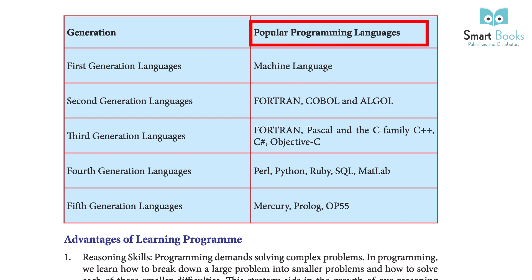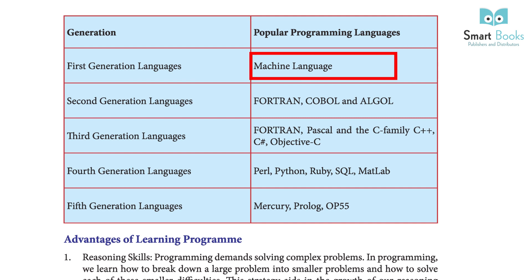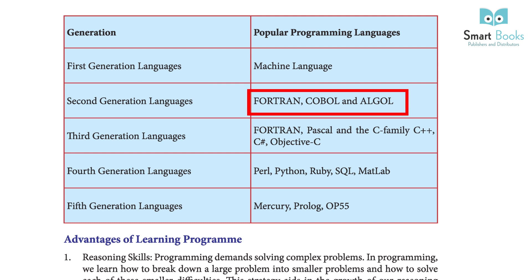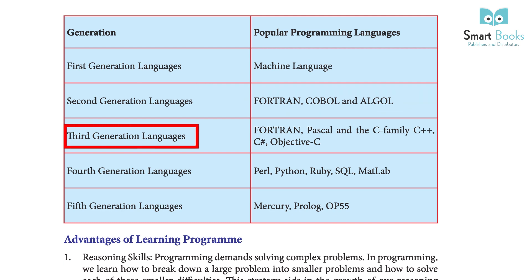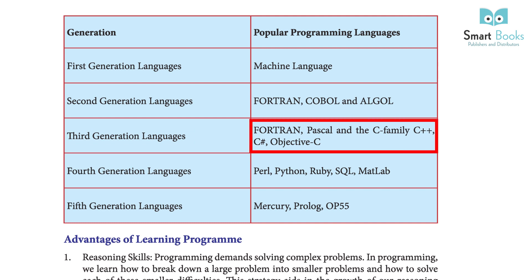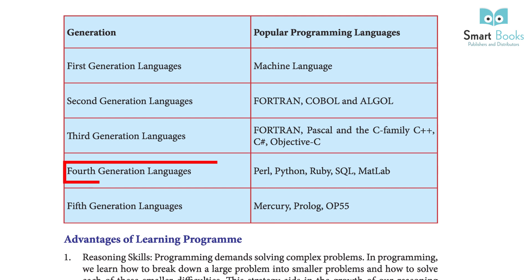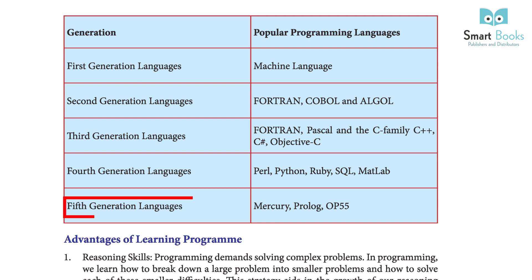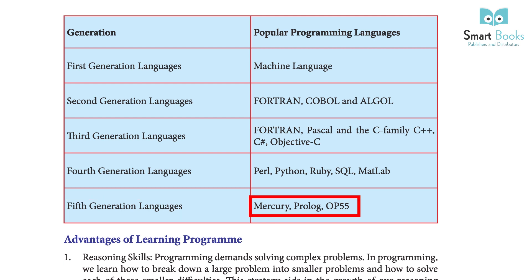Popular programming languages by generation: first generation — machine language; second generation — FORTRAN, COBOL, and ALGOL; third generation — FORTRAN, Pascal, and the C family (C++, C#, Objective-C); fourth generation — Perl, Python, Ruby, SQL, MATLAB; fifth generation — Mercury, Prolog, OP55.